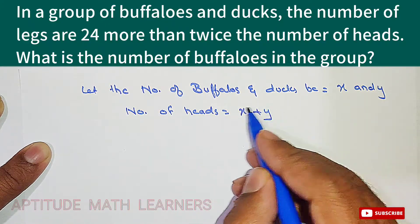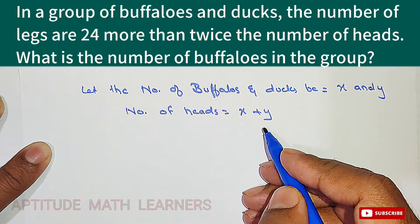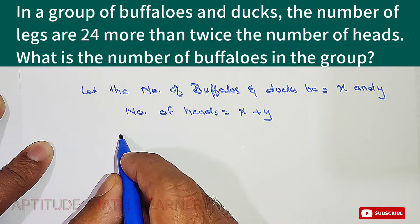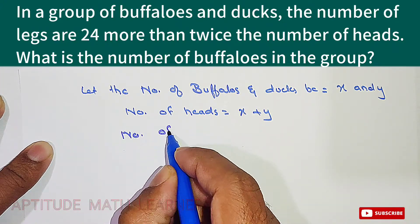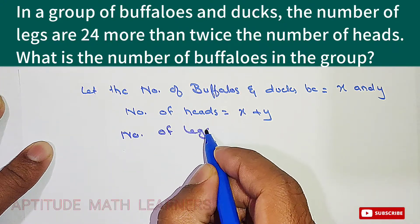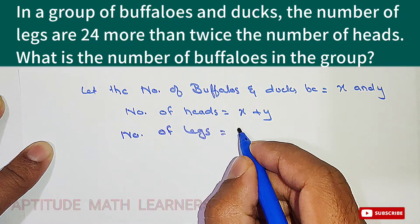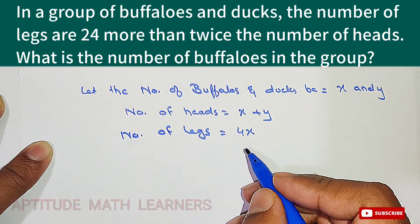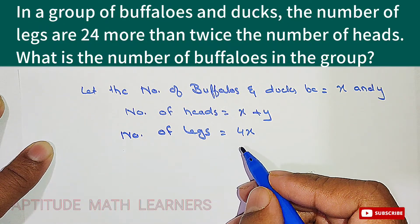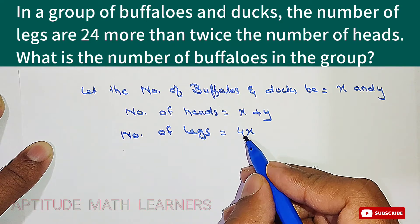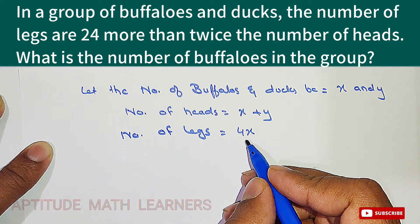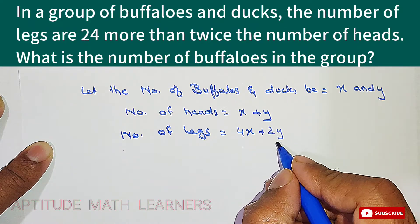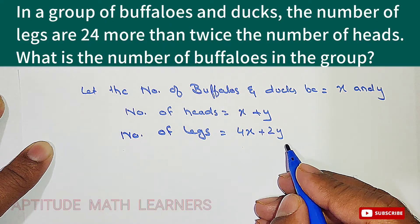The number of legs is 4x for buffaloes, since a buffalo has four legs, plus 2y for ducks, since a duck has only two legs.